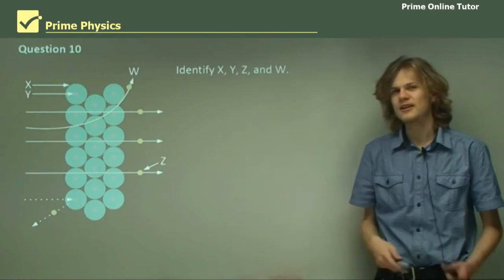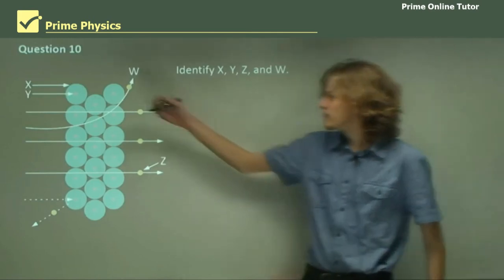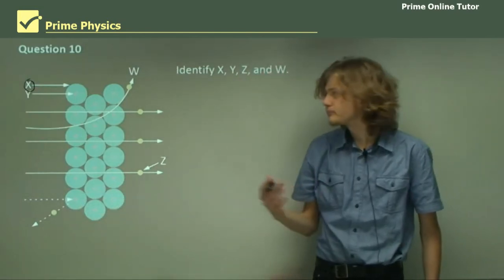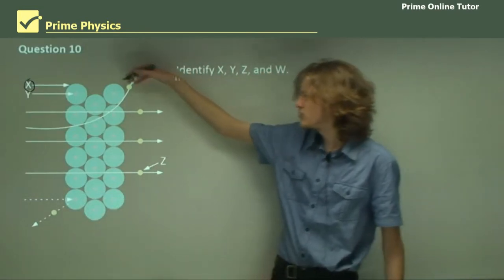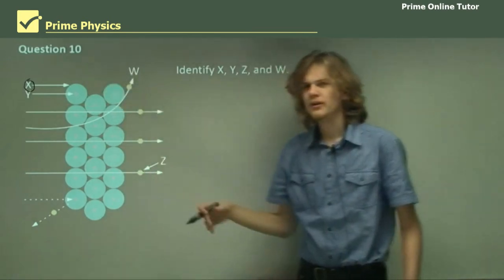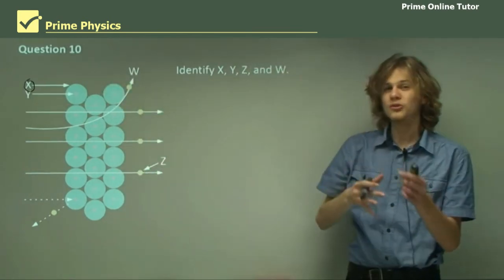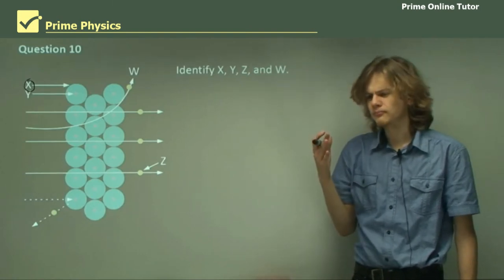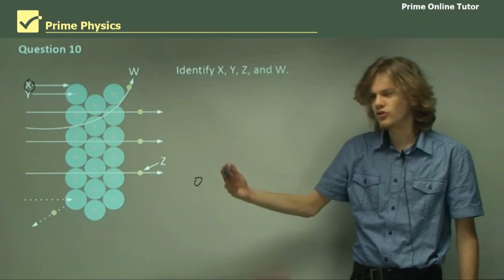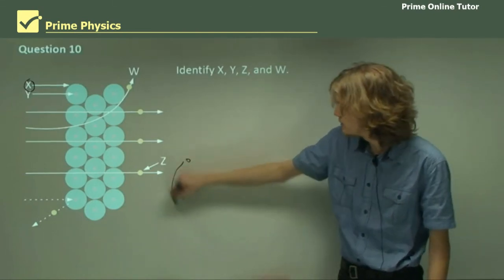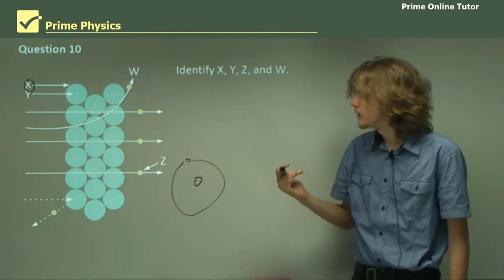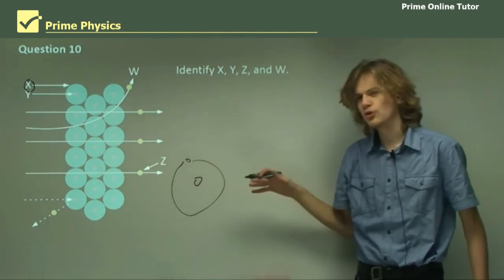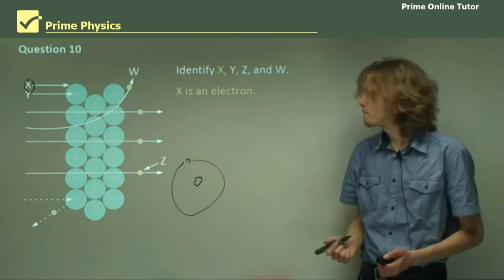Question ten. Identify X, Y, Z, and W. We have X over here, Y, Z, and W. Let's start with X. X is pointing to this little blue circle that's around these even smaller red circles. If we think of Rutherford's model of the atom, we've got a positively charged nucleus in the middle and negatively charged electron going around. In that case, this X would correspond to the negatively charged electron going around. So, X is an electron. What about Y? Y is pointing to the little red dot right in the middle. We know from the fact that it's an experiment using gold foil that this must be the nucleus of one of the gold atoms. So, Y is a gold nucleus.